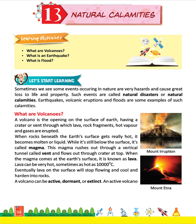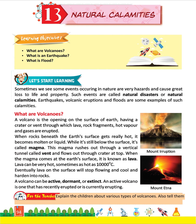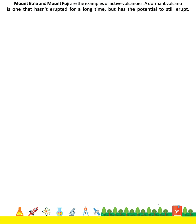A volcano can be active, dormant, or extinct. An active volcano is one that has recently erupted or is currently erupting. Mount Etna and Mount Fuji are examples of active volcanoes. A dormant volcano is one that hasn't erupted for a long time but has the potential to still erupt.